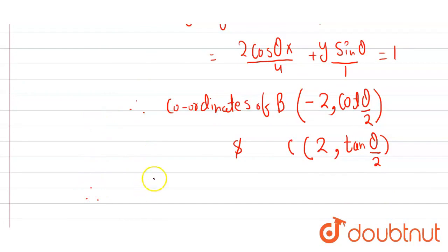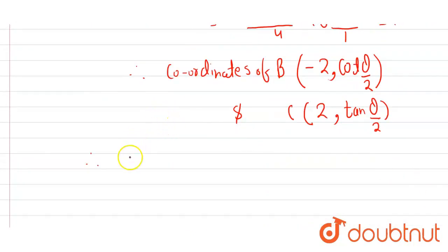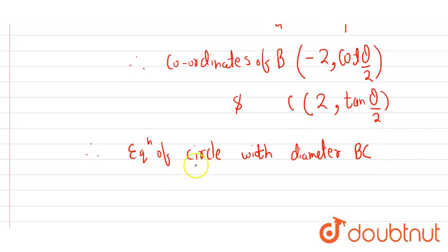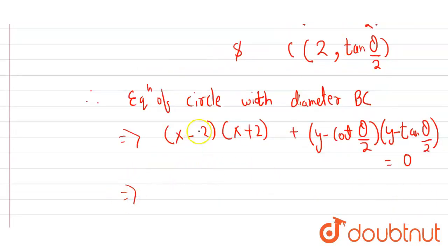Therefore, if we find the equation of circle whose diameter endpoints are B and C, the equation of circle with diameter BC will be, according to the question, x minus 2 into x plus 2 plus y minus cot theta upon 2 into y minus tan theta upon 2 equals to 0. We have used the coordinates of B and C.